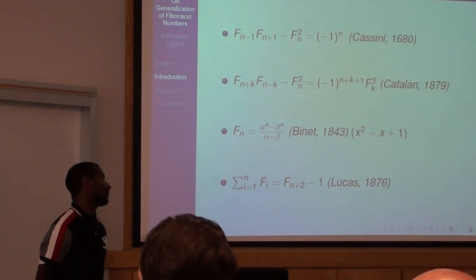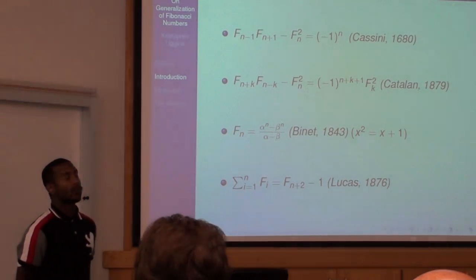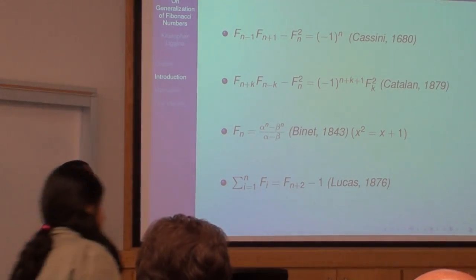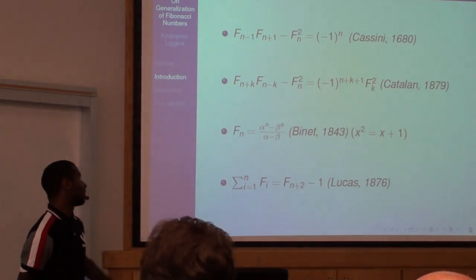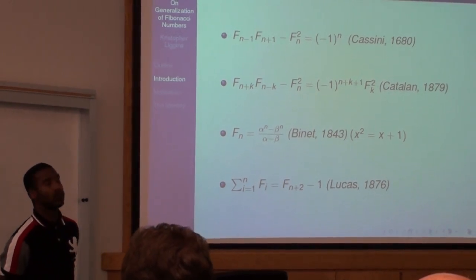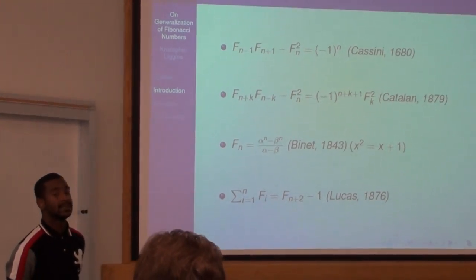Binet in 1843 where the roots of the quadratic equation x squared equals x plus one, and the sum of the first n Fibonacci terms which was discovered by Lucas in 1876.